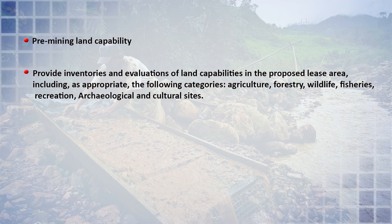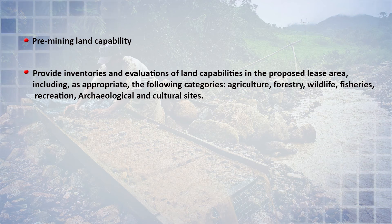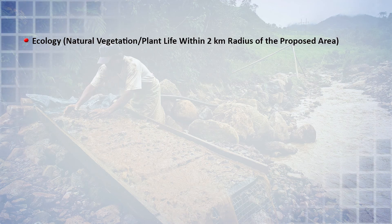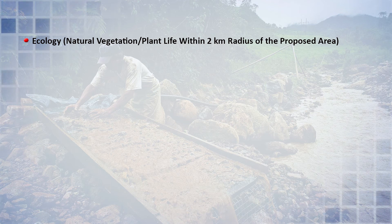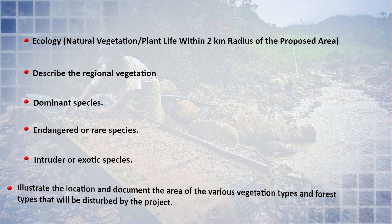Pre-mining land capability assessment provides an inventory and evaluation of land capabilities — classified into categories such as agriculture, forestry, wildlife, fisheries, recreation, and archaeological and cultural sites. All land capability areas and their location must be documented. The ecology within 2 km radius of the proposed area must be described, including dominant species, endangered or rare endemic species, and exotic or intrusive species. The various vegetation types and forest types that could be disturbed by the project must also be illustrated and documented.